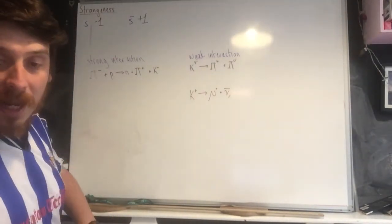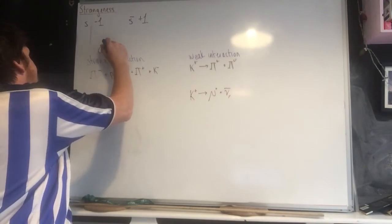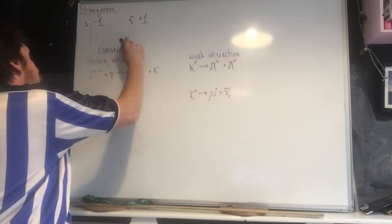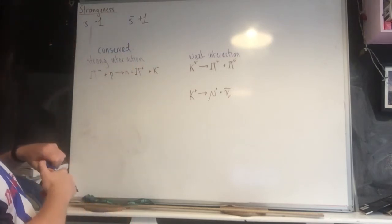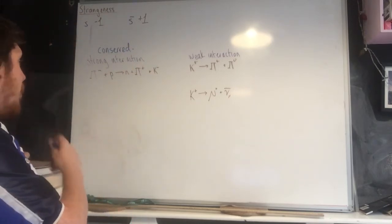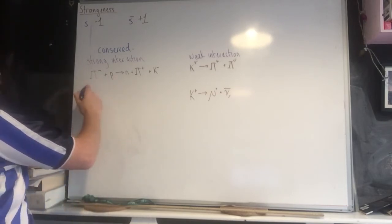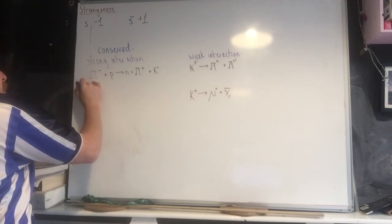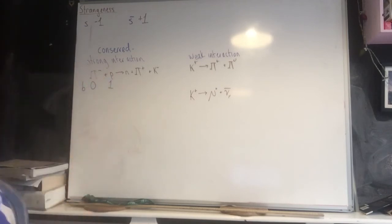In a strong interaction, strangeness has to be conserved. Let's look at an example. Here, this is a meson, so it has a baryon number of zero. This is a proton with a baryon number of one.